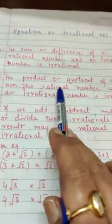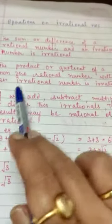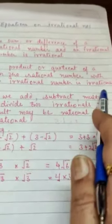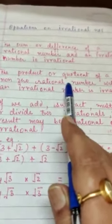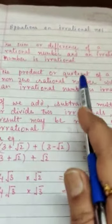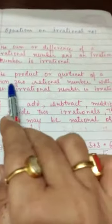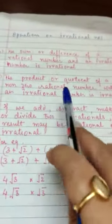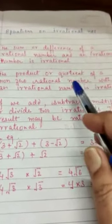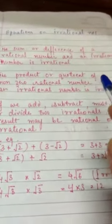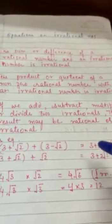Next, the product and quotient of a non-zero rational number with an irrational number is always irrational. Product means root 3 into 2 gives root 3, root 3 upon 5 is quotient, that is division. This is also irrational. Here the rational number must be non-zero. If we multiply any number by zero, the product is always zero. If we divide by zero, we get infinity. And zero divided by any rational or irrational number is always zero.